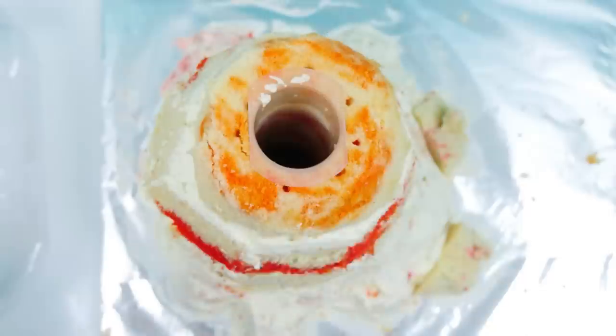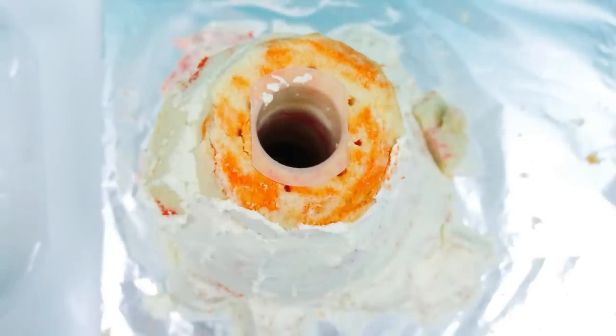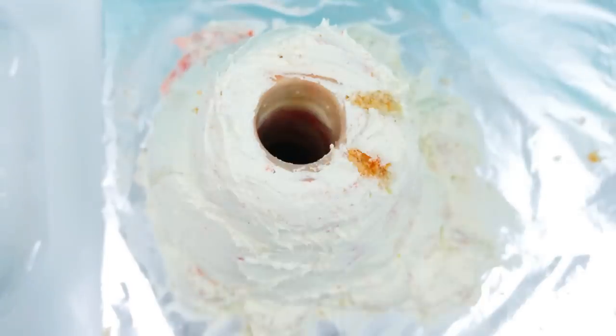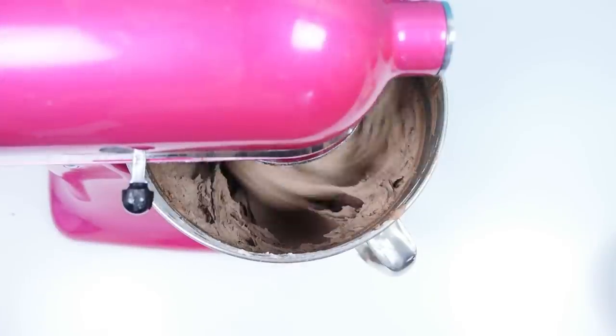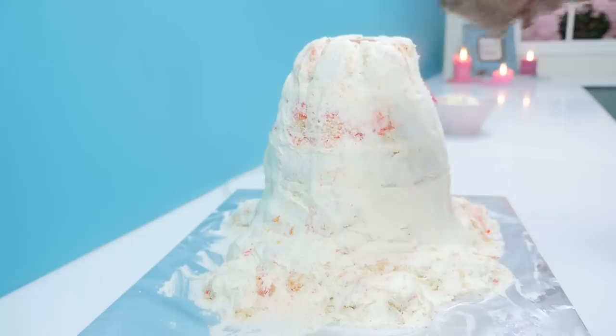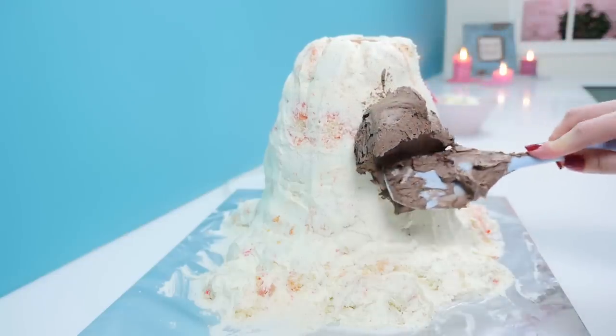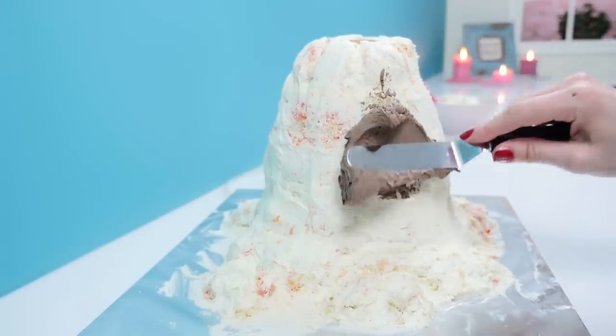Completely cover the whole thing in a thin coat of buttercream, this is called the crumb coat. And then cut some slits at the front to encourage the lava to run that way. Whip up a batch of chocolate buttercream and spread it over the whole thing so it looks more like dirt and rock rather than a vanilla cake.